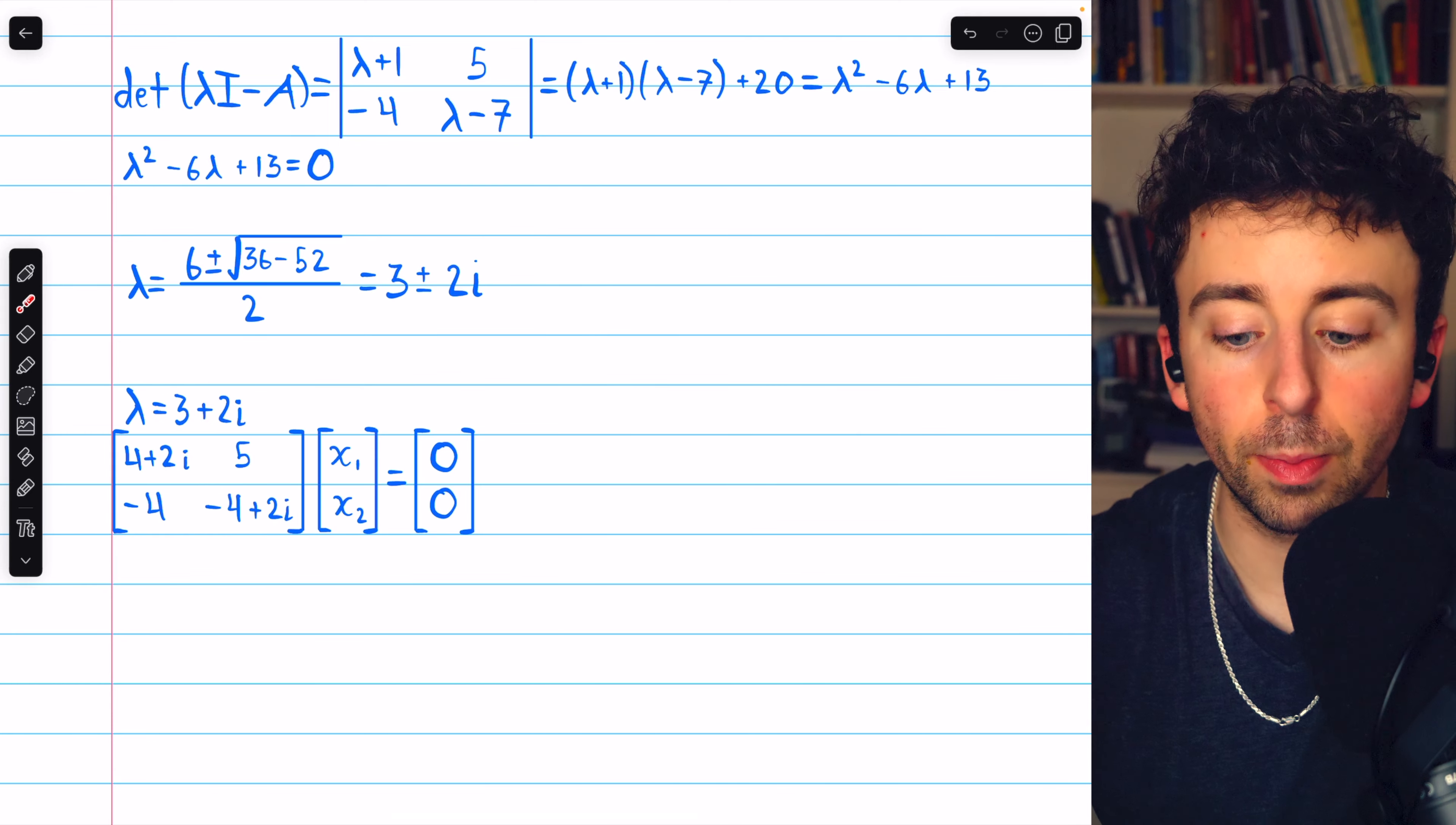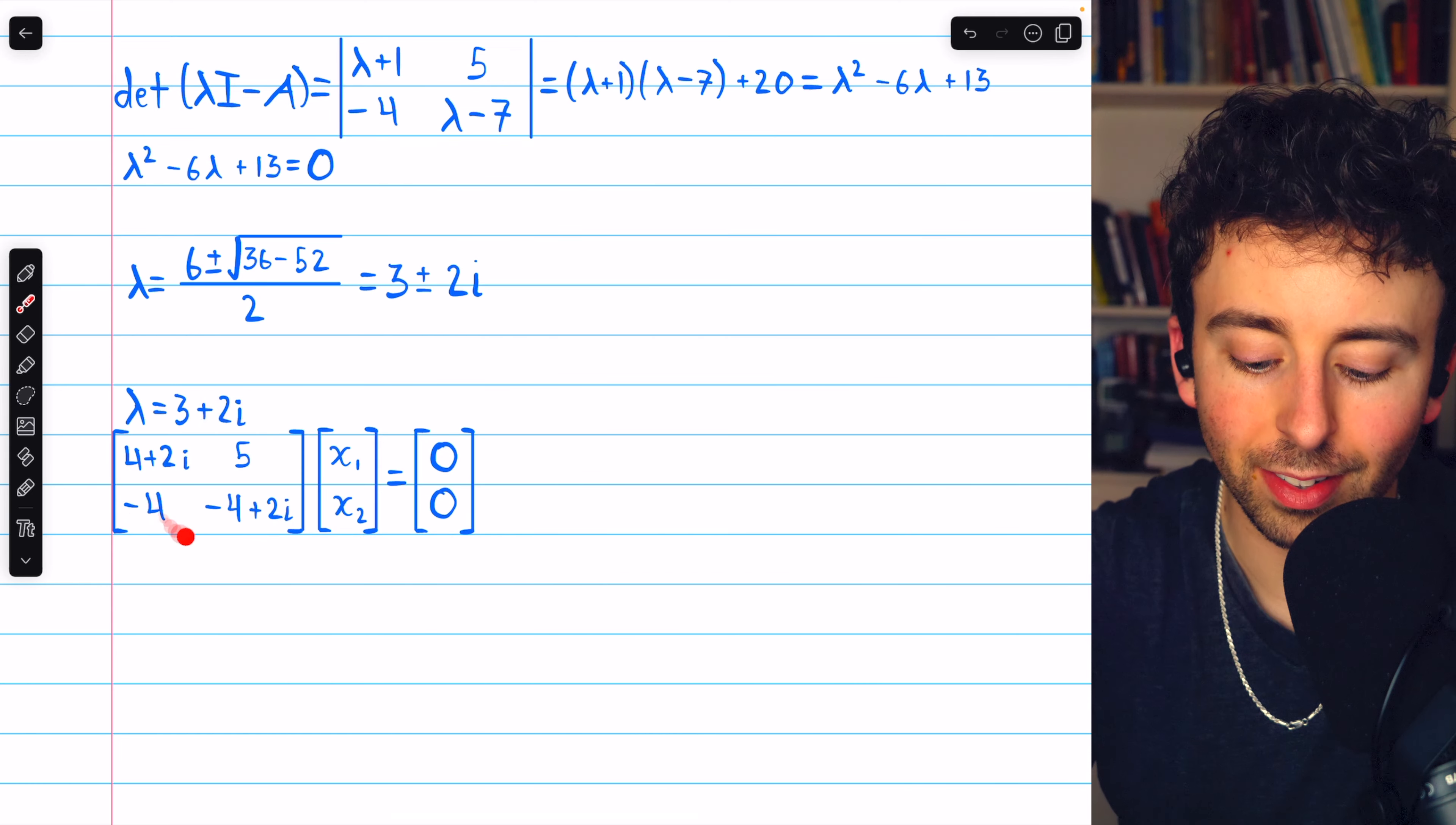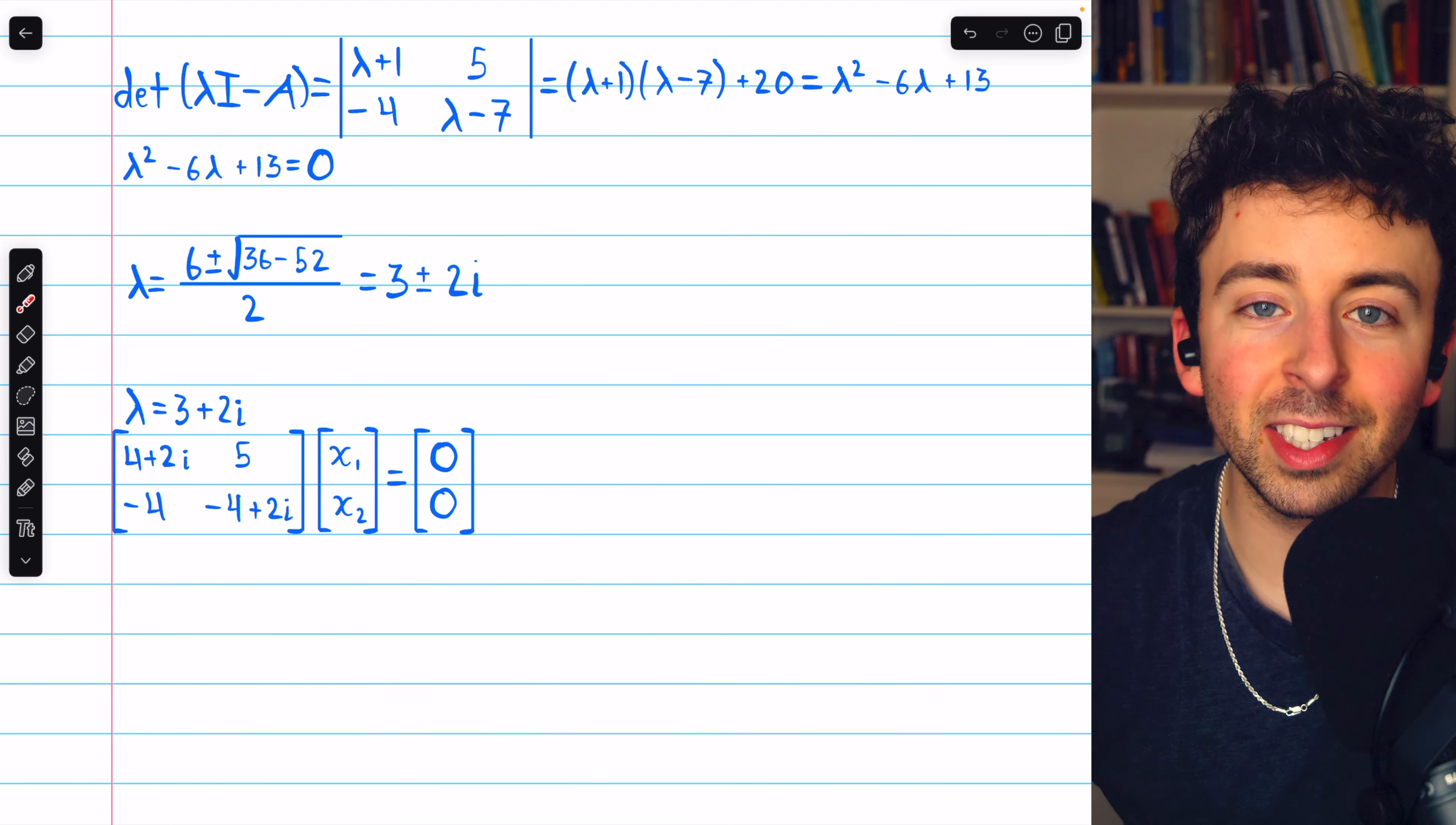So, we plug 3 plus 2i into this matrix, and then we're trying to find a basis for its null space. So, we're going to try to solve this system. Now, we could perform Gauss-Jordan elimination on this system, but that would be a good bit of work. Everything's harder with complex numbers.